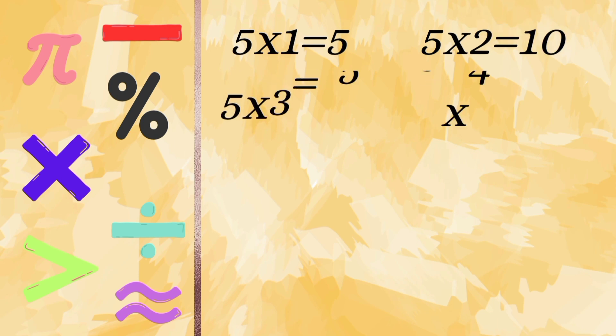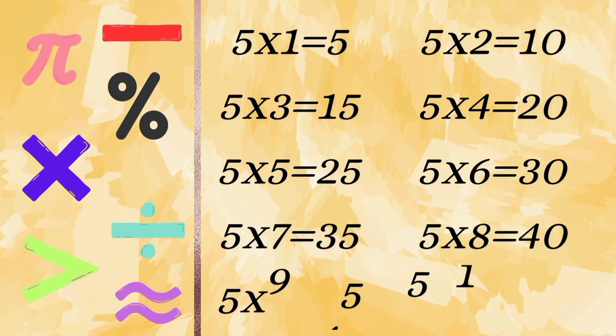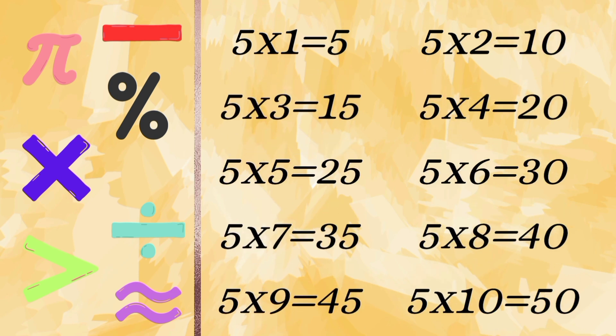Table of 5: 5×1=5, 5×2=10, 5×3=15, 5×4=25, 5×5=25, 5×6=30, 5×7=35, 5×8=45, 5×10=50.